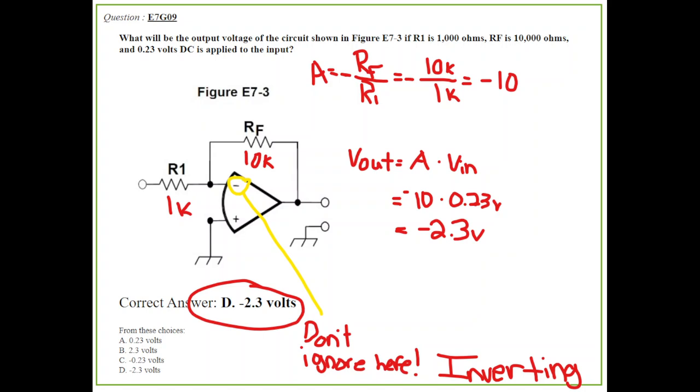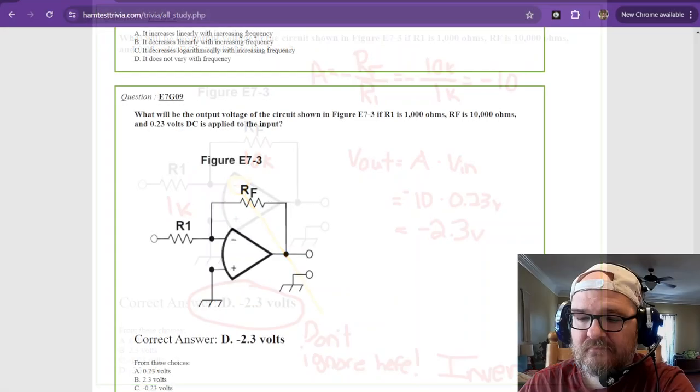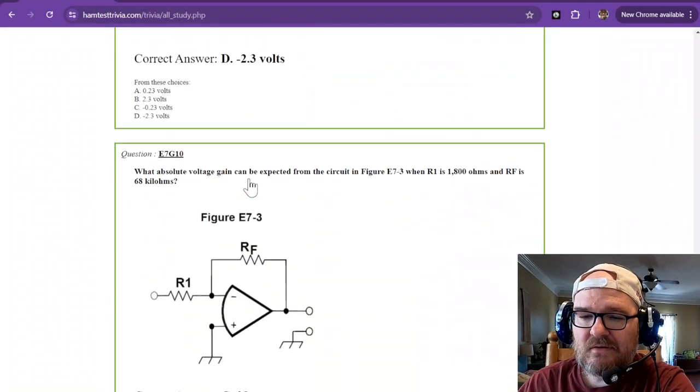In this case, it is asking you for the output voltage. Now, you need to not ignore the fact that this inverts. So, if you have a positive voltage coming in, you're going to have a negative voltage coming out. Your formula for Vout is your gain times voltage in. So your gain is negative 10. Remember, it's inverting times 0.23 volts. So, that means that your output is going to be negative 2.3 volts. Remember, it's an inverting amplifier.